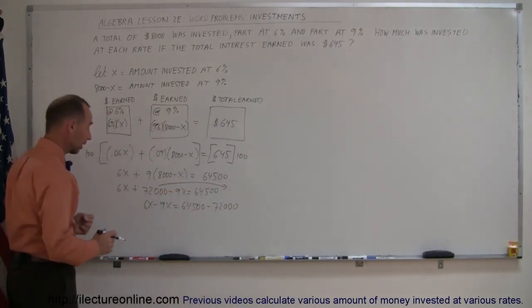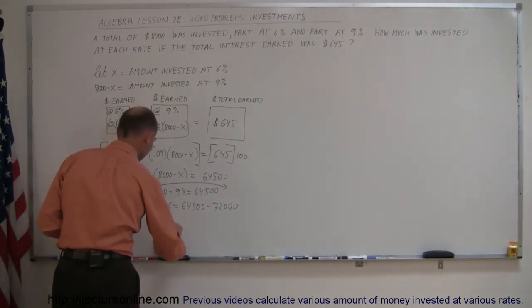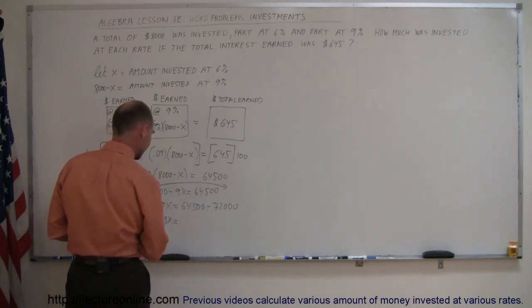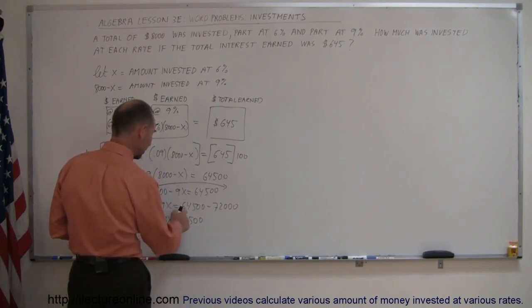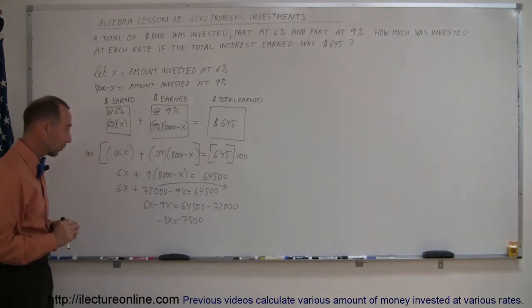Then when we combine like terms, on the left side we get minus 3X. On the right side, we get, let's see here, that would be negative 7,500. If we add this to this, we get exactly 72,000, so that is correct.